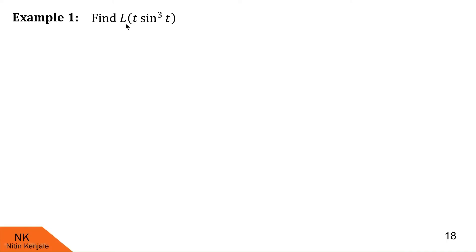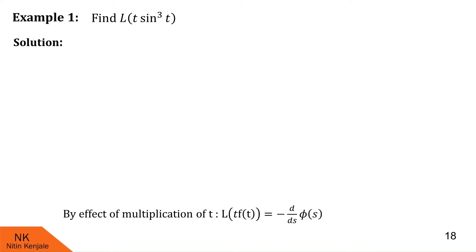Here we are asked to find Laplace of t into sine cube t. If I consider sine cube t as f of t, then this will become Laplace of t into f of t. In such cases, we use effect of multiplication by t to find out the Laplace transform. It says that Laplace of t into f of t is minus derivative of phi of s with respect to s, where phi of s is Laplace of f of t.